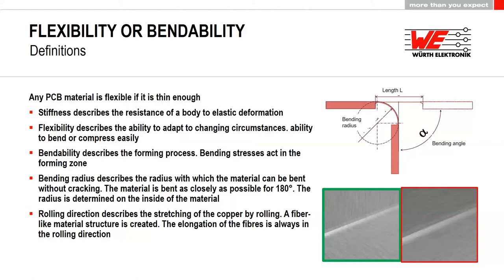A very important point is rolling direction. For rolled annealed copper foil, it's critical to look at the direction of the annealing. The copper has a fiber-like structure created by rolling, and the elongation of the fibers must always be in the rolling direction. If bending is perpendicular to the rolling direction, every advantage of the rolled annealed copper foil is lost.